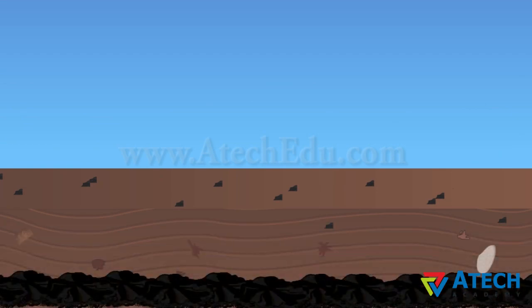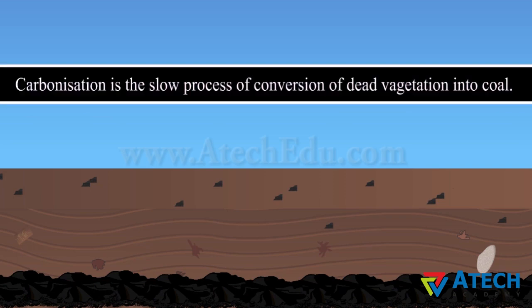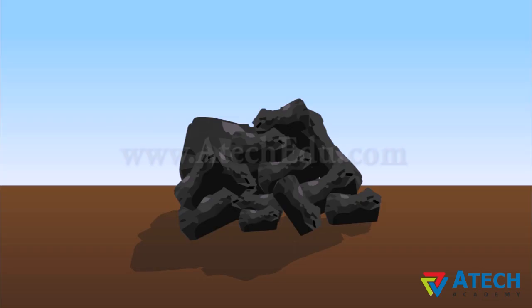As coal contains mainly carbon, the slow process of conversion of dead vegetation into coal is called carbonization. Coal is a black, hard, solid substance formed by the process of carbonization.